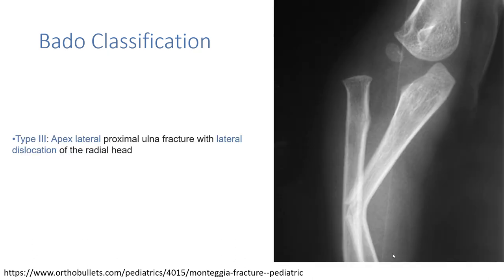And this is Type 3, where we can see a lateral proximal ulnar fracture with lateral dislocation of the radial head.